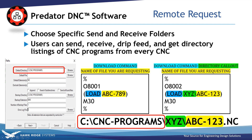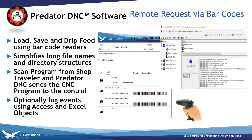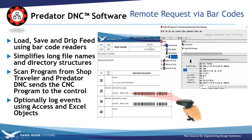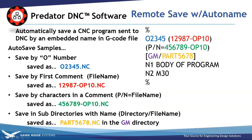This would queue up that file in this directory. To streamline this process even further, you can use a barcode reader. Simply scan the program from the shop traveler and Predator DNC sends the CNC program through the control. All you have to do is hit read execute at the machine.